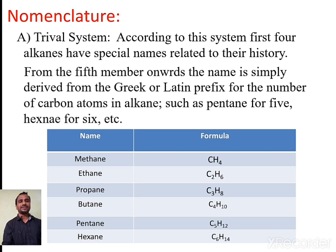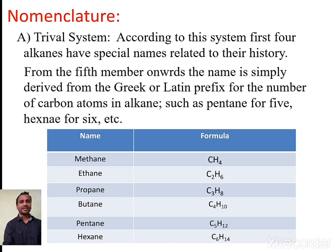For example, methane has molecular formula CH4, ethane has C2H6, then propane and butane follow. Up to butane, names are given according to history of occurrence. From pentane onwards, the name is based on how many carbon atoms are present. For example, pentane with molecular formula C5H12 has 5 carbon atoms. The next example with molecular formula C6H14 is called hexane. In this way names are assigned according to the trivial system.